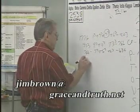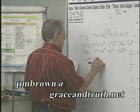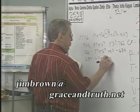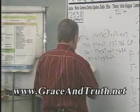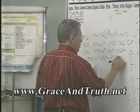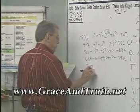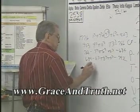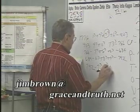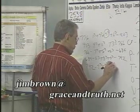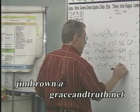You take 684: 6 to the third power plus 8 to the third power plus 4 to the third power. That gives you 792. Then you take 792: 7 to the third power plus 9 to the third power plus 2 to the third power, and that gives you 1,080.